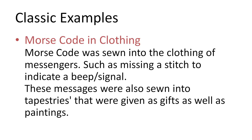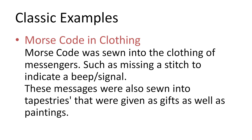Another example of physical steganography is Morse code stitched or knitted into clothing. This was believed to be used quite regularly in WWII. The patterns would be things like missing stitches or changes in colours. These were sewn into tapestries as well as shirts, sleeves or collars. Similarly, Morse code patterns were also painted into paintings that may have been given as gifts.